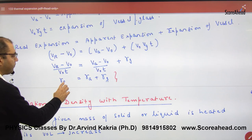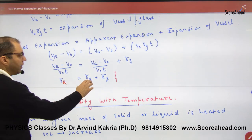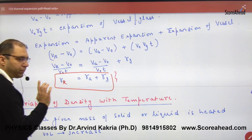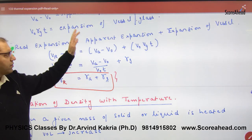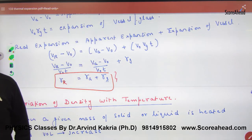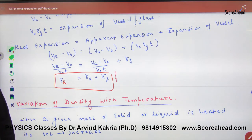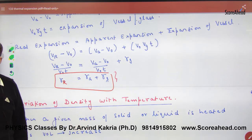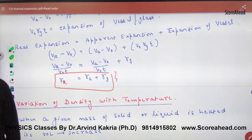Note this formula: real gamma equals apparent gamma plus glass, i.e., vessel gamma. If needed in objective questions, we will use this formula — for NCERT or for competition. If it comes, this formula will be used. The chance of it appearing is less, but keep it noted.